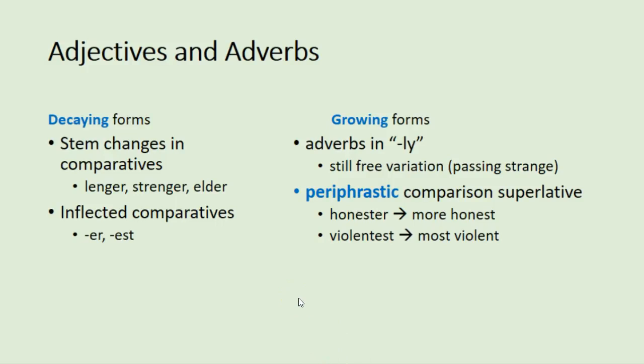During the Early Modern English period, we have decaying forms and growing forms. In adjectives and adverbs, decaying forms include stem changes in the comparatives.